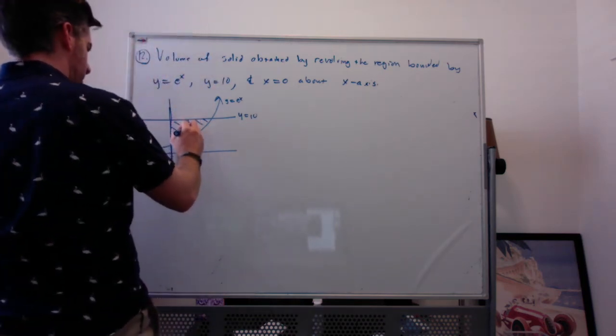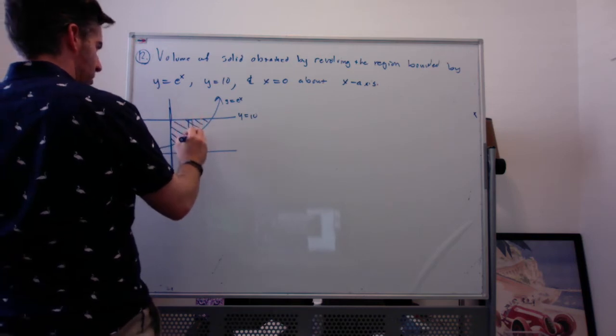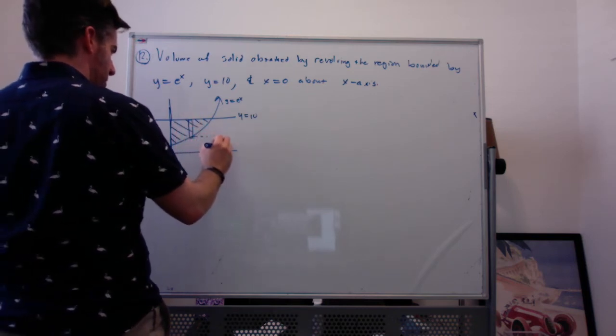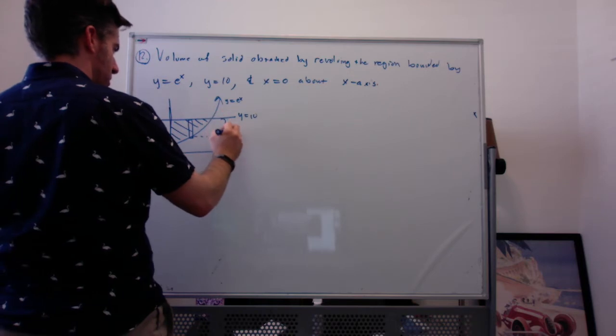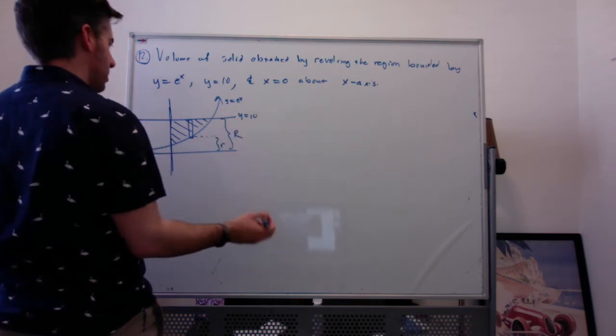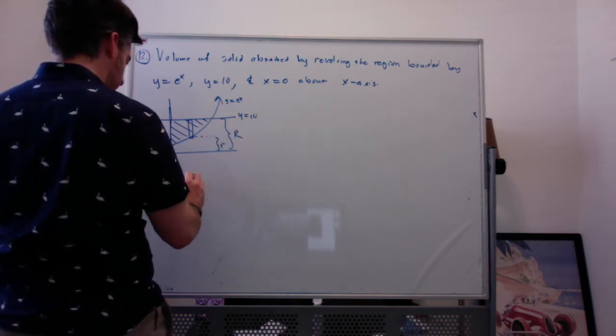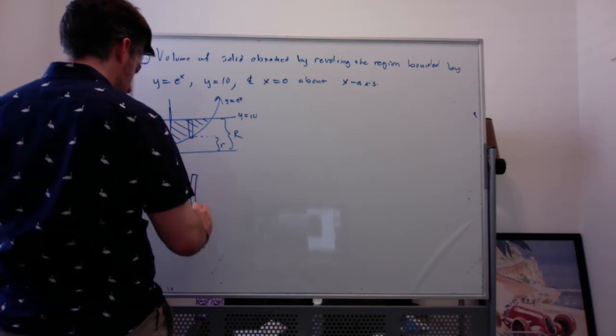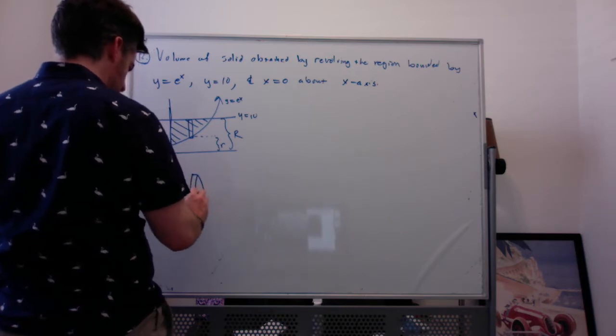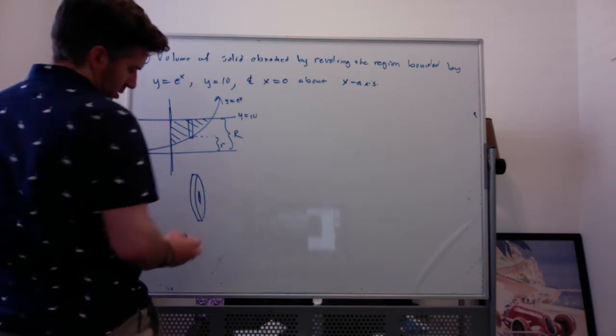So I draw my little strip. There's my inner radius. There's my outer radius. And the volume of that thing rotated around the x-axis is going to be pi times the big radius squared minus pi times the little radius squared all times dx.